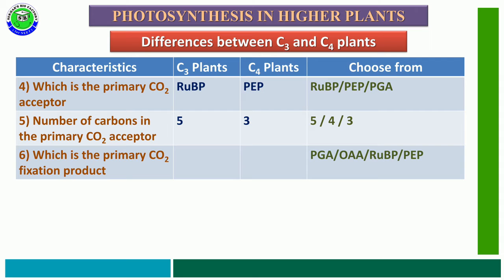The sixth characteristic feature is which is the primary CO2 fixation product. The given options are PGA, OAA, RuBP, or PEP. The correct answer is: in C3 plants, after CO2 fixation, the primary product is phosphoglyceric acid (PGA). But in C4 plants, the first primary CO2 fixation product is oxaloacetic acid (OAA).